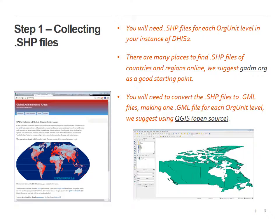You're going to need to save one GML file for each org unit level. For example, Canada is split up into provinces, so that province level would be one org unit level, and we would save that as a single GML file. We would also save a single GML file for all of Canada as the entire shape, and then continuously more for each level we go down — regions, sectors, whatever you've chosen in your instance. These will be called vector layers if you're using QGIS, which is what we suggest — an open source software that allows you to view shapefiles and save them into GML.